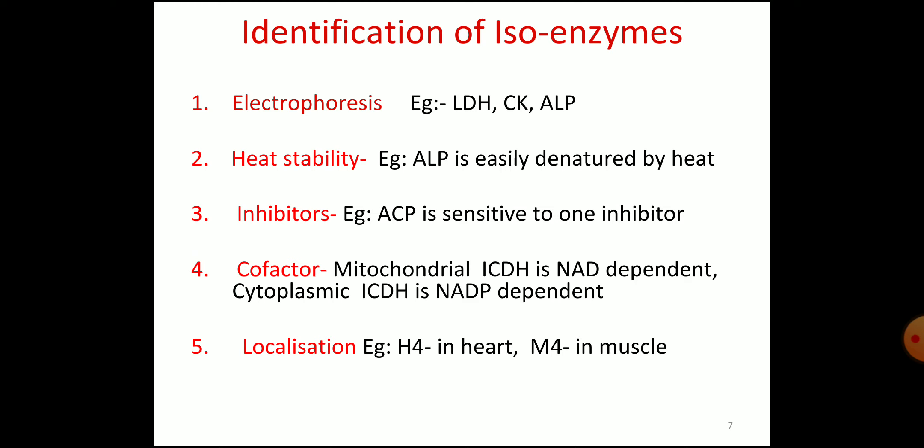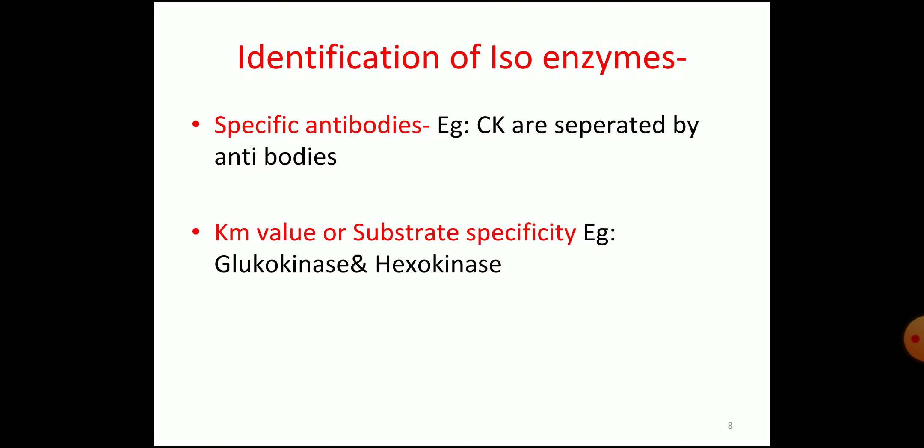Localization is another method: if LDH1 is elevated, it is from the heart; LDH5 from skeletal muscle — depending on the localization of production of subunits we can identify the isoenzyme. Another method is by specific antibodies; creatine kinase isoenzymes are separated by specific antibodies. Similarly, KM value and substrate specificity can distinguish glucokinase and hexokinase, which catalyze the same reaction but have separate affinity towards glucose.